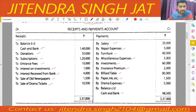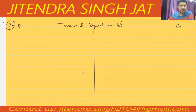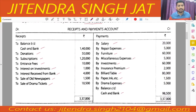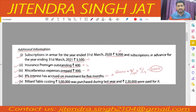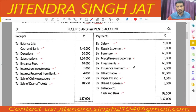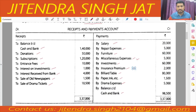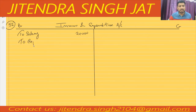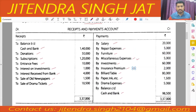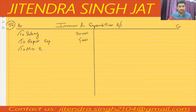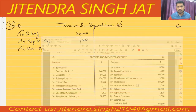Starting with the expense side of the income and expenditure account. Salary: there is no adjustment in salary — the adjustment is only in insurance premium and miscellaneous expenses. So salary is 20,000 — we will record 20,000. Then repair expenses: 5,000, no adjustment in repair expenses. Furniture will come on the asset side. Miscellaneous expenses: 5,000 — there is some adjustment, so first we write miscellaneous expenses 5,000.